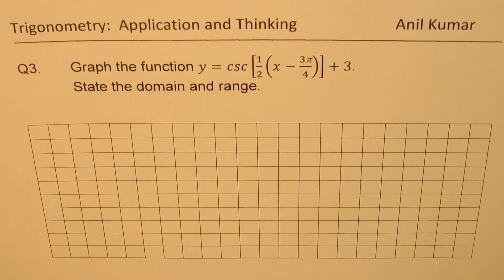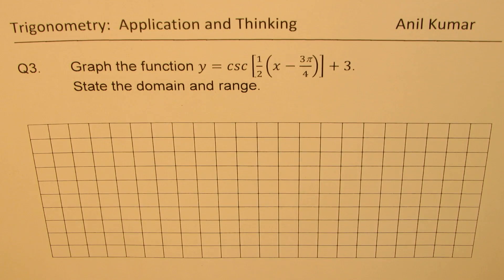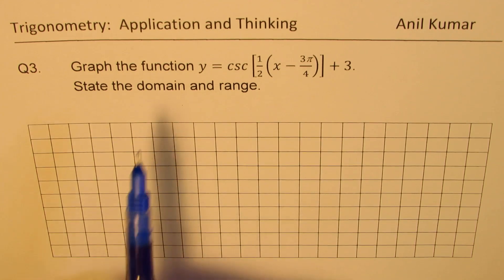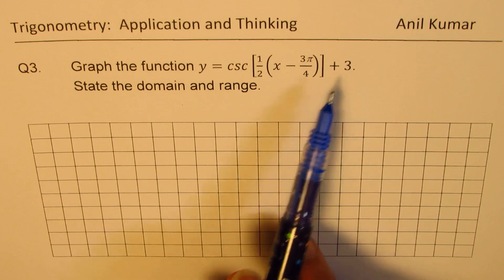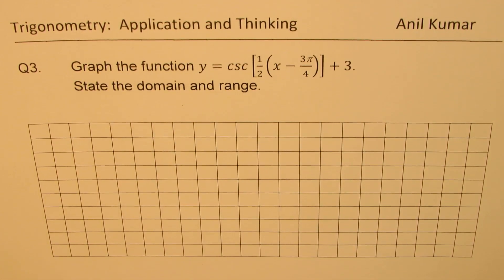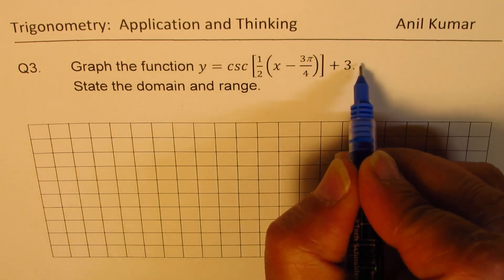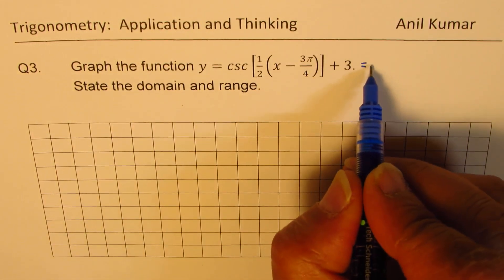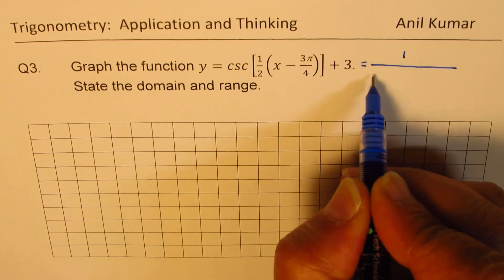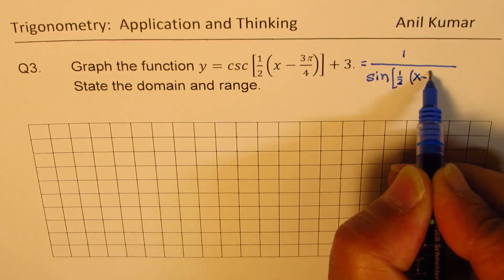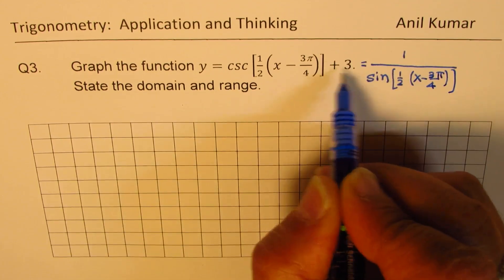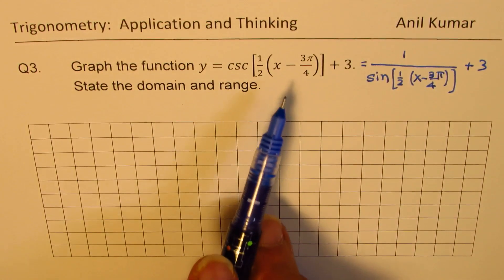I'm Anil Kumar, welcome to my series on trigonometry. In this video we are going to discuss in detail how to sketch transformed reciprocal trigonometric functions. We'll sketch the graph of y = csc(½x - 3π/4) + 3. Cosecant is the reciprocal of sine, so we can also write this as 1 over sin(½x - 3π/4), and then translate it three units up.